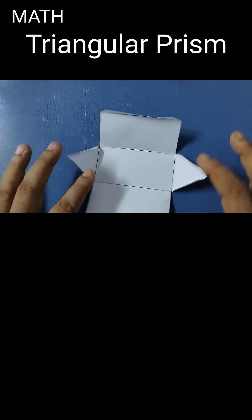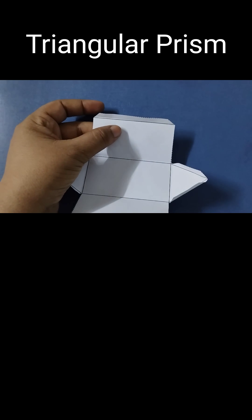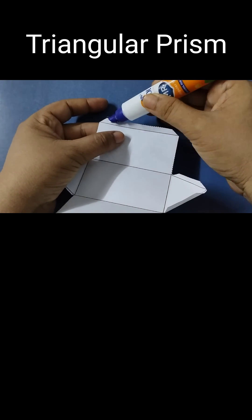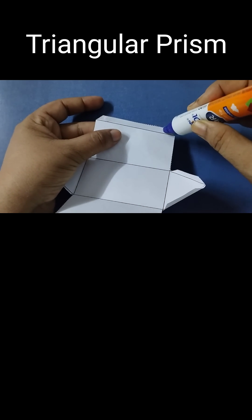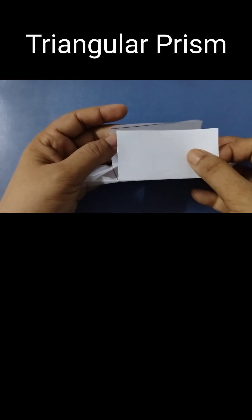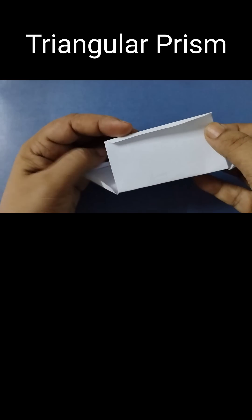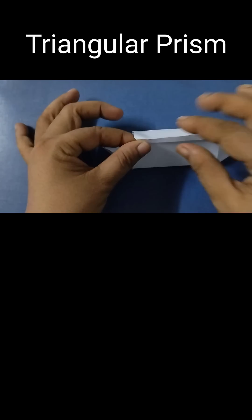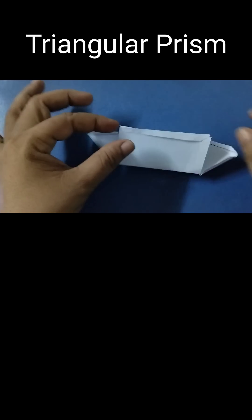Now our net is ready. I'll put glue here so that it sticks properly. I'll put a little glue here and then fold it like this, stick it like this.